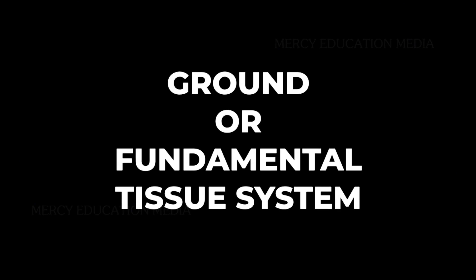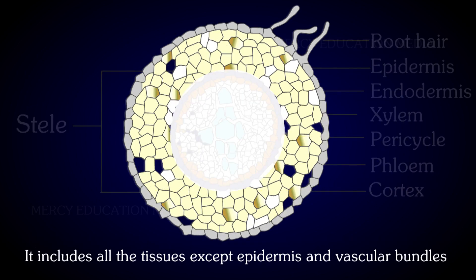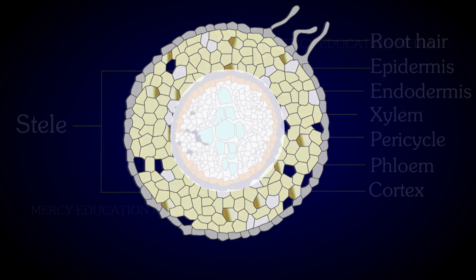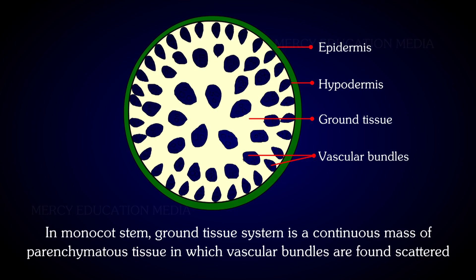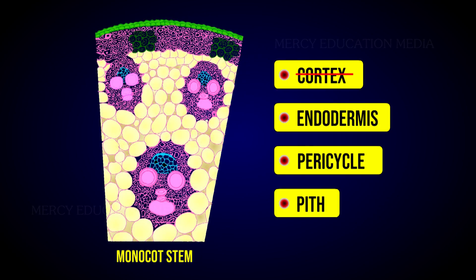The ground or fundamental tissue system constitutes the main body of the plants. It includes all the tissues except epidermis and vascular bundles. In monocot stem, the ground tissue system is a continuous mass of parenchymatous tissue in which vascular bundles are found scattered. Here, the ground tissue is not differentiated into cortex, endodermis, pericycle, and pith.